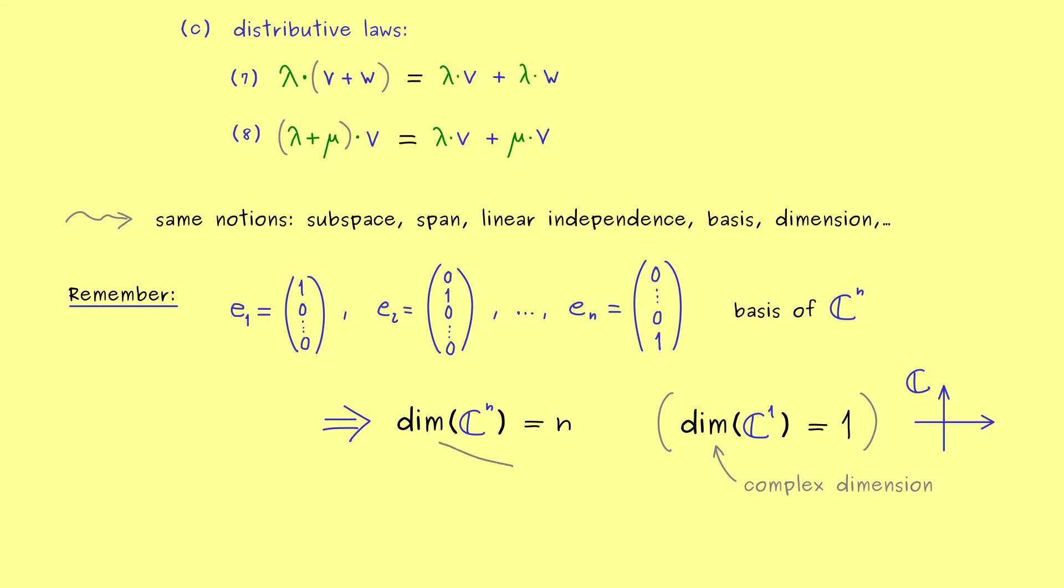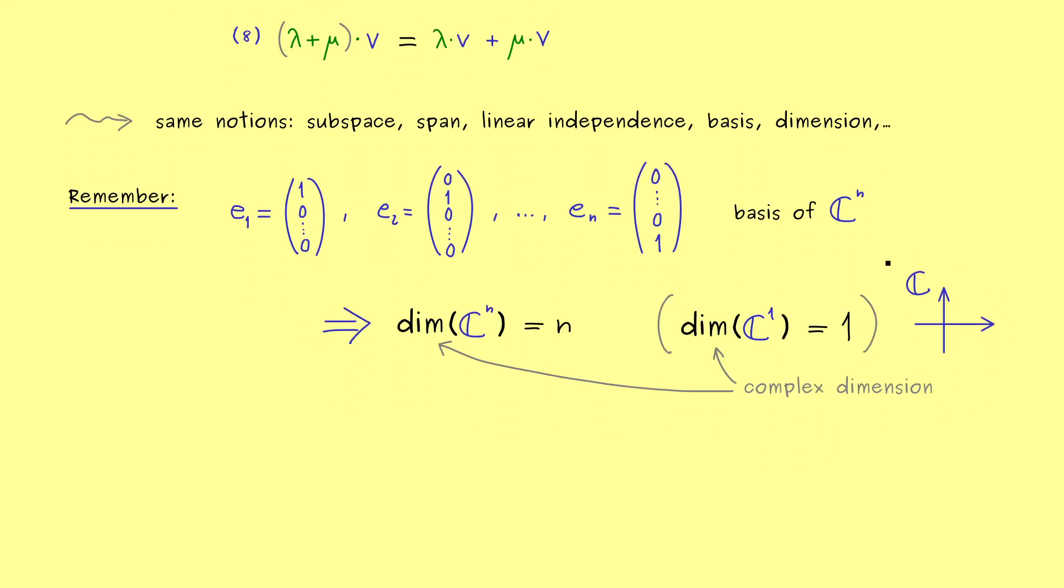And as I said before this is indeed the only difference in our definition. So don't be confused all the calculations work the same as before but maybe our visualization for complex vector spaces is not so good anymore. But I would say that's definitely something we get used to after some time.